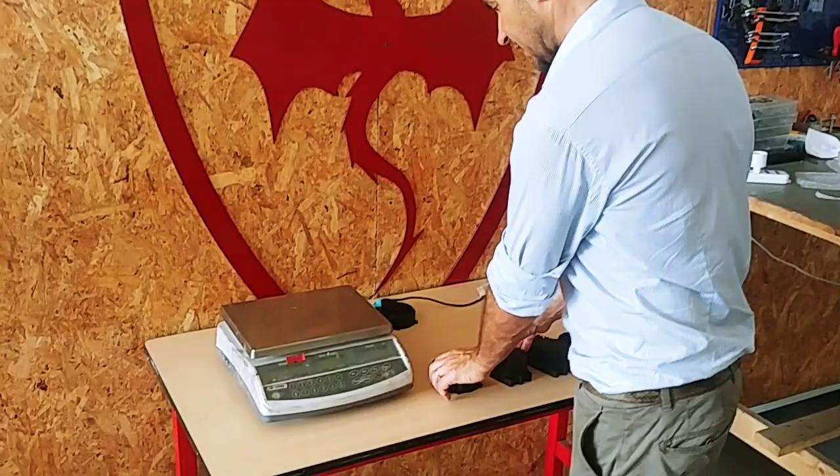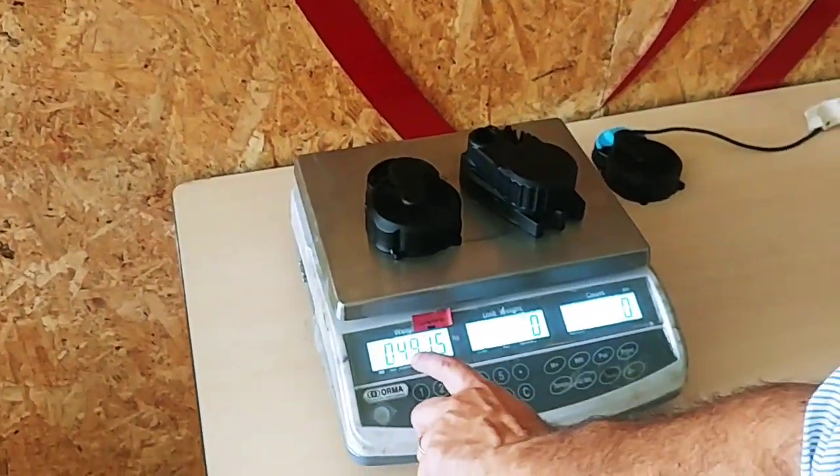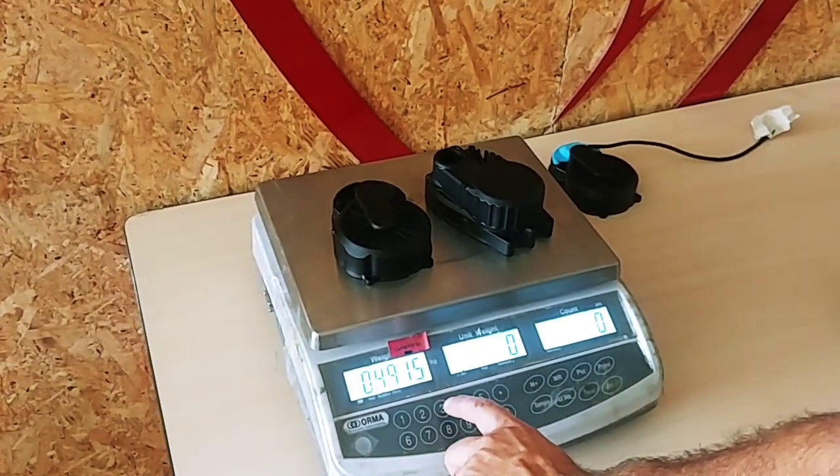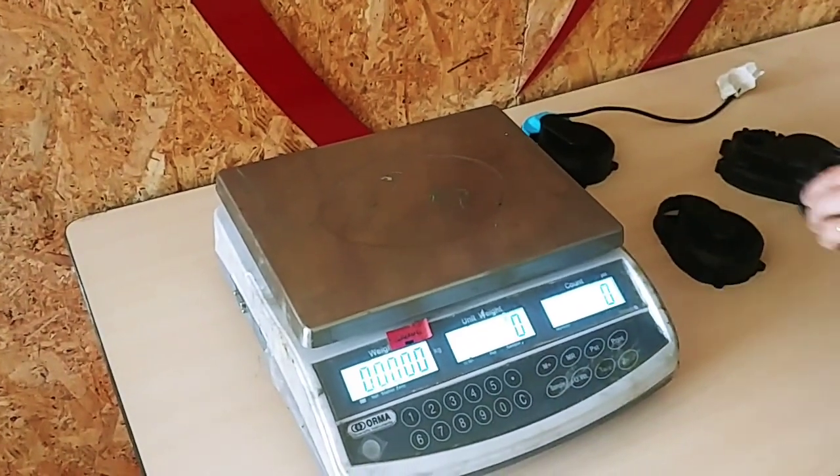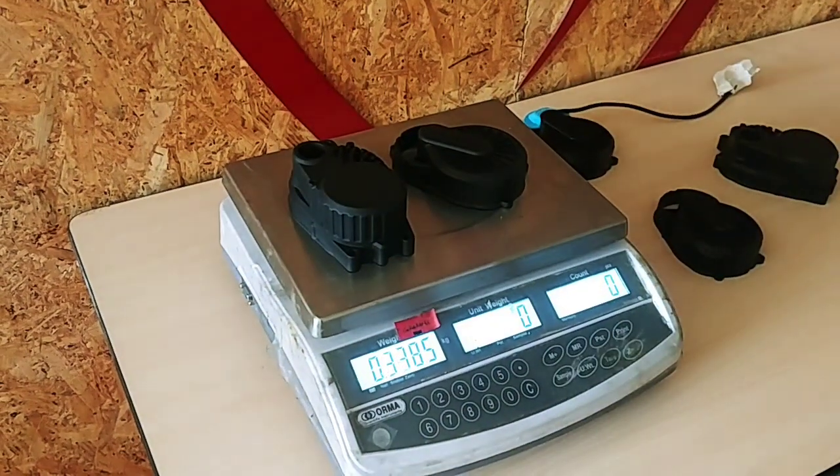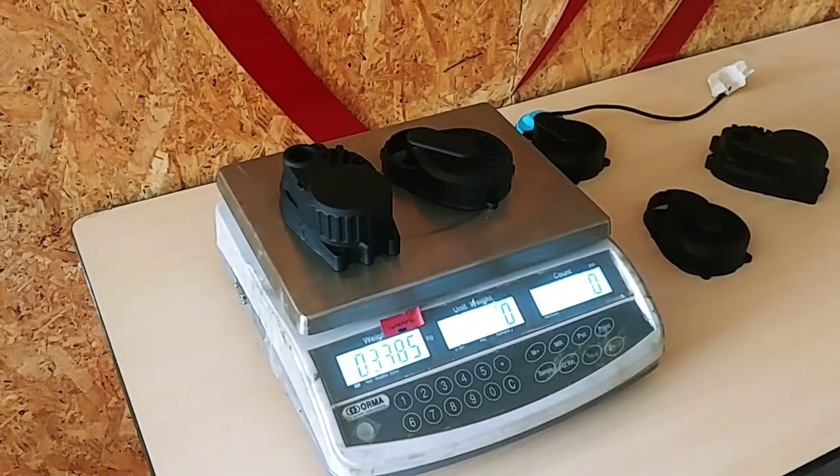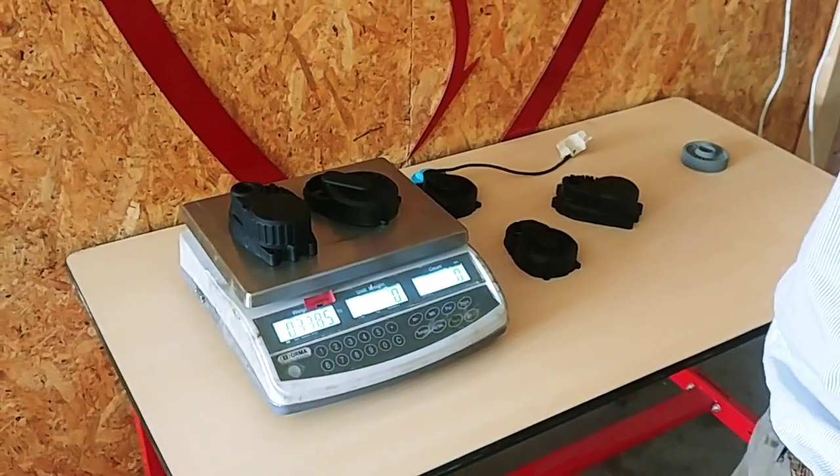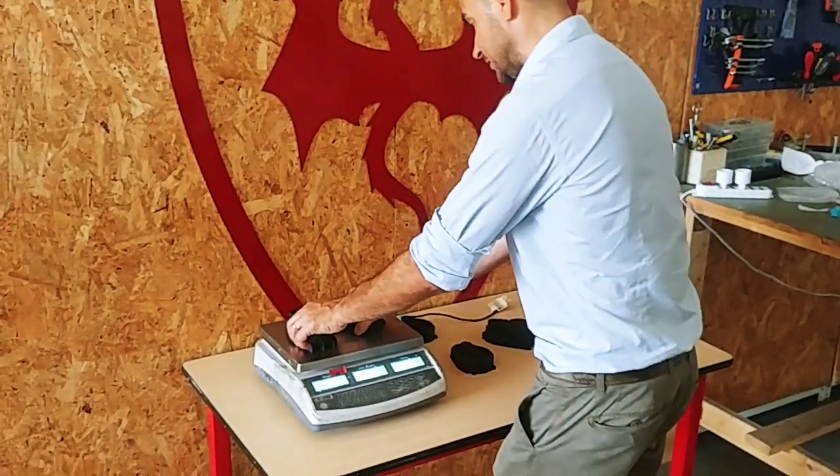Here is a scale to show you the weight difference. That's 491 grams for aluminum and 338 grams for magnesium. So you have a saving in terms of weight of around 150 grams—that's amazing.